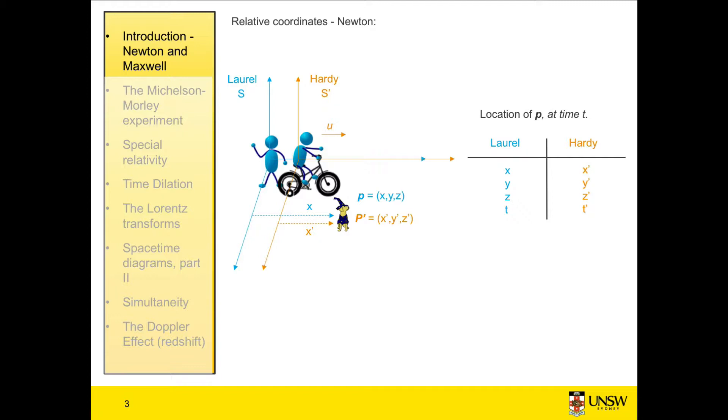After some time T, which is shown in the diagram, he's travelled some distance in the x direction. And we'll call this distance delta x. So the distance that Hardy is from the dog now, his x dash, is equal to his original distance x, minus the distance he has travelled, which is delta x. We know that distance is equal to speed times time. So we can write Hardy's distance, x dash, in terms of Laurel's distance, x. And we find that x dash is equal to x minus u, Hardy's speed, times T.